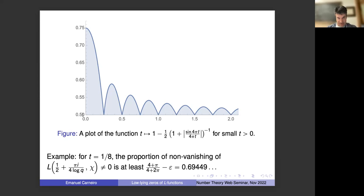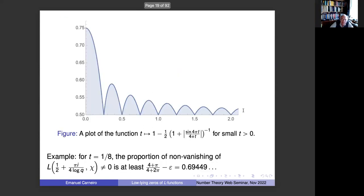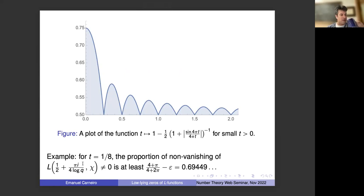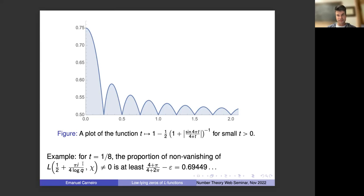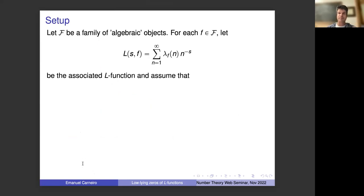From the graph, you can see that this proportion is always bigger than one-half, but it has some bumps — sometimes we can do better — and at the limit, when the height is large, we get back to one-half. Now let me set up my framework. I'm going to be a little bit vague especially because many people in the audience will know these things much better than I do. I want to focus more on the analytic aspects that will come later.